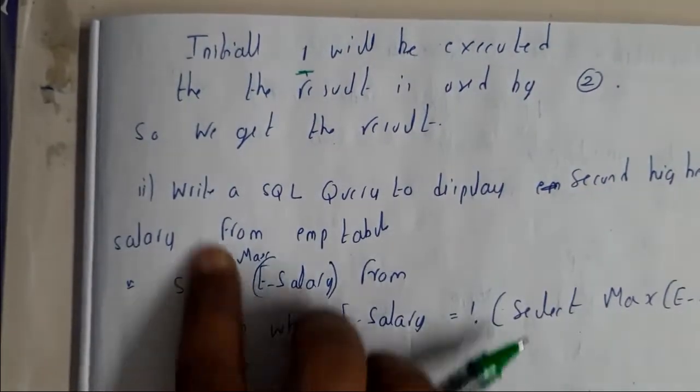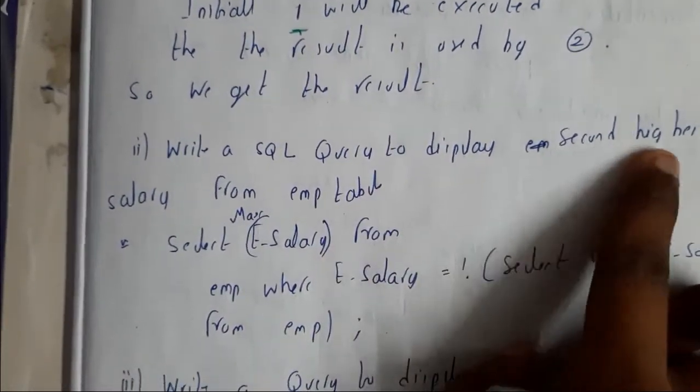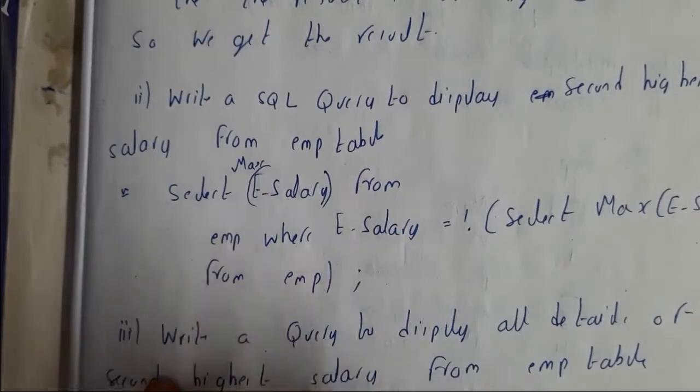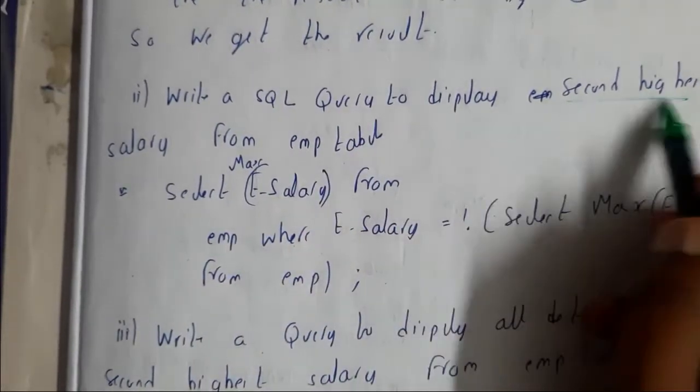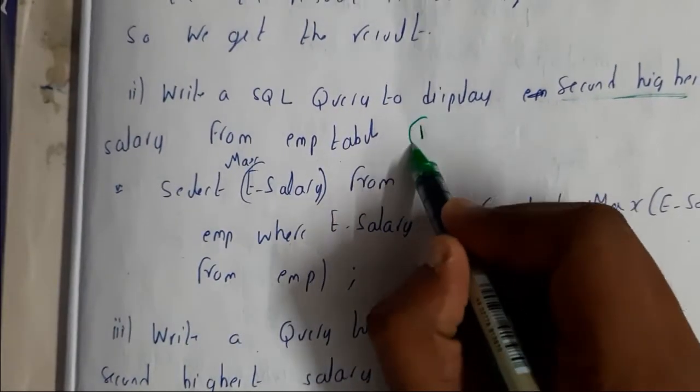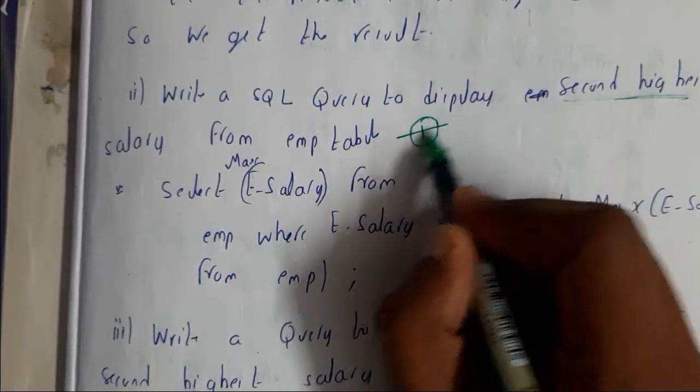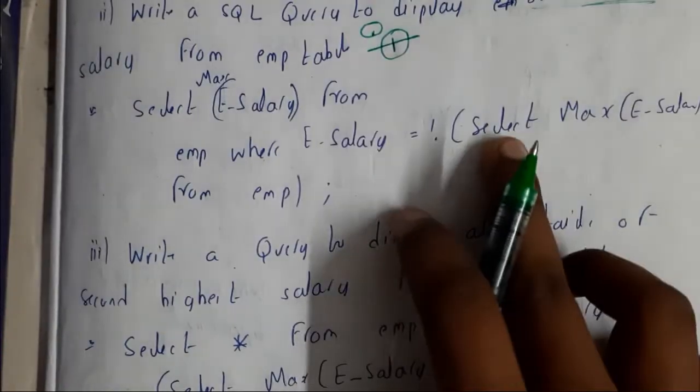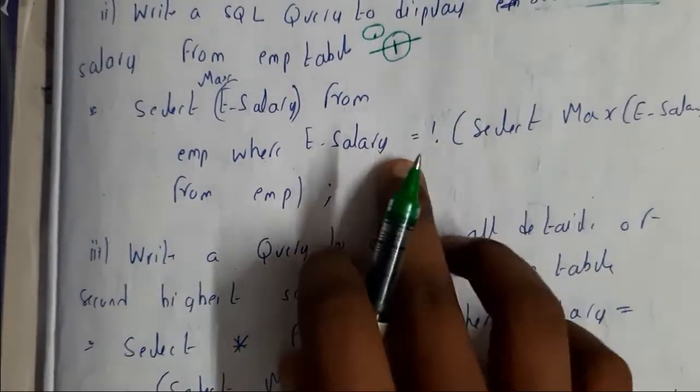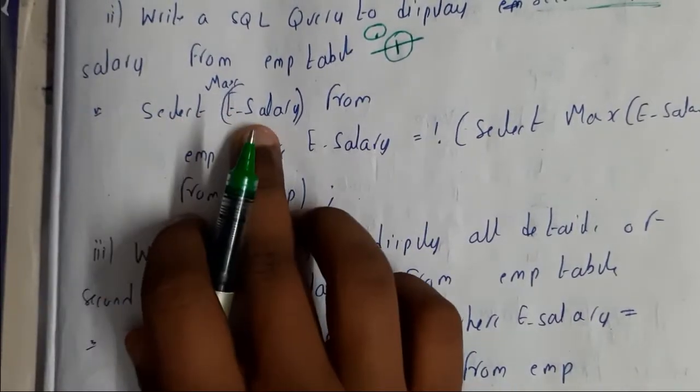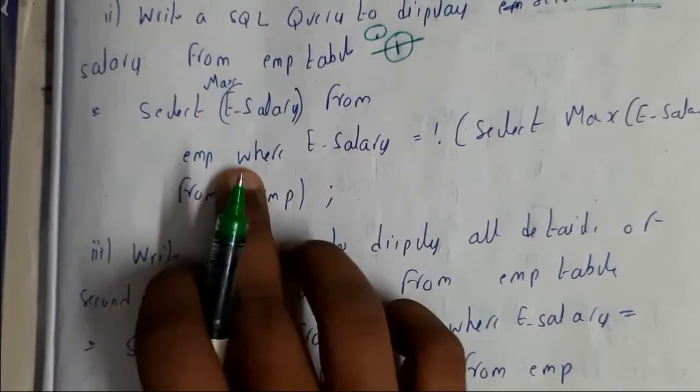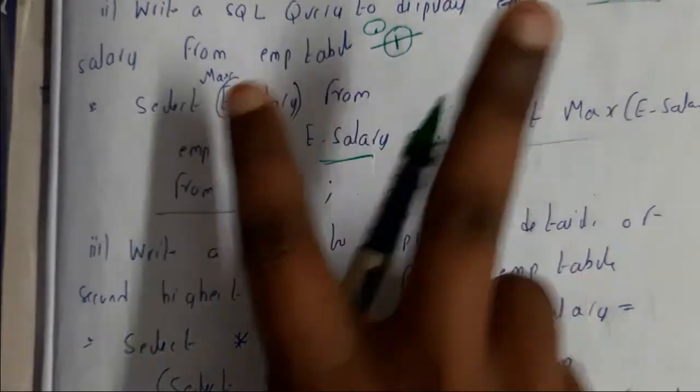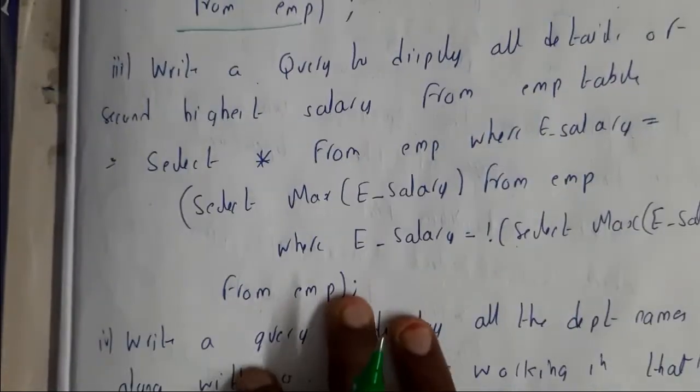Let's go through more examples. Write a SQL query to display the second highest salary from the employee table. First we need to select the first highest and without including this, find the highest, then it is indirectly the second highest. SELECT MAX(Salary) FROM Emp WHERE E_Salary is NOT EQUALS to SELECT MAX(E_Salary) FROM Emp. Indirectly, we will be getting the second highest.